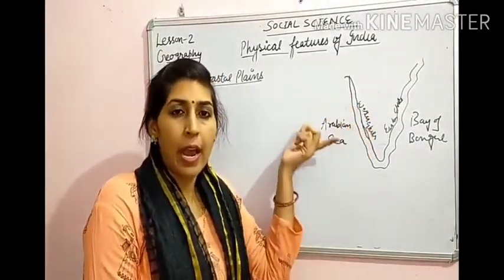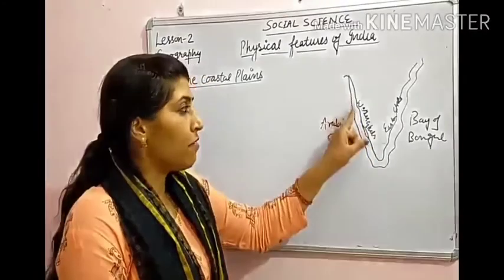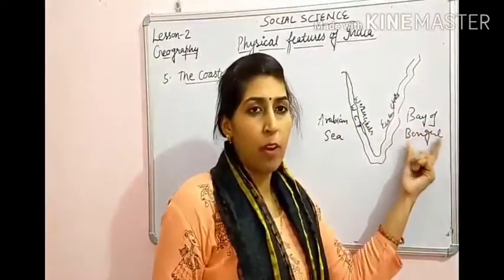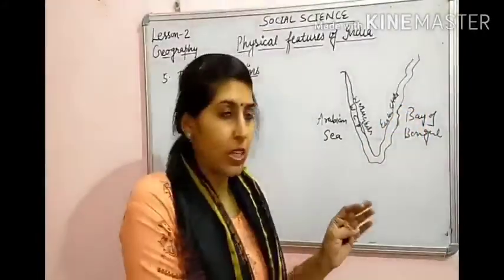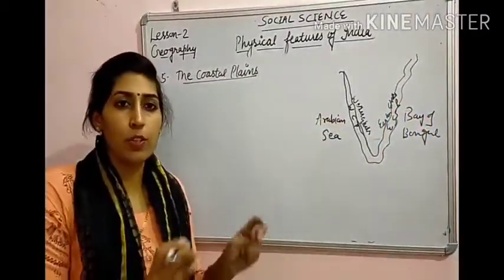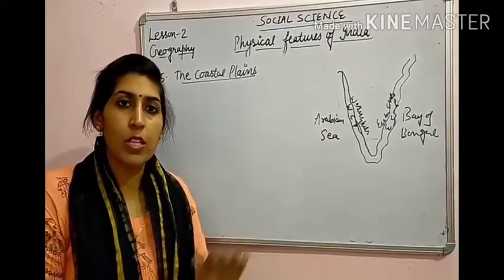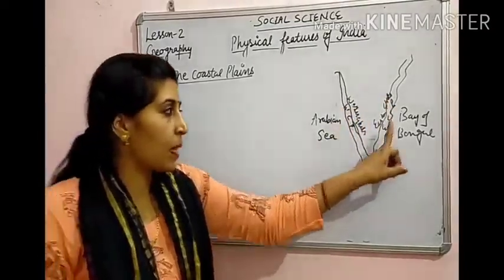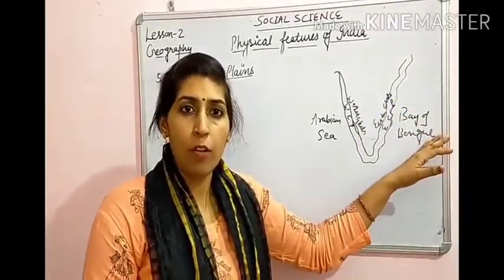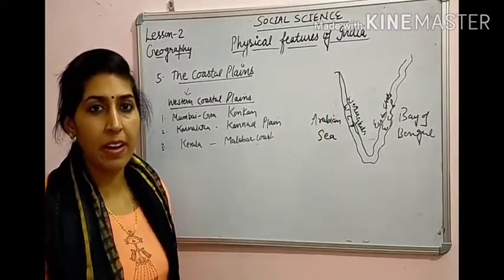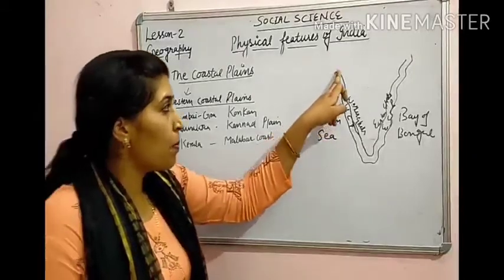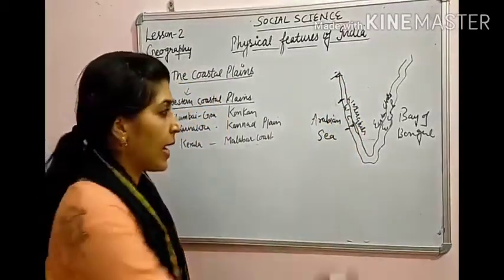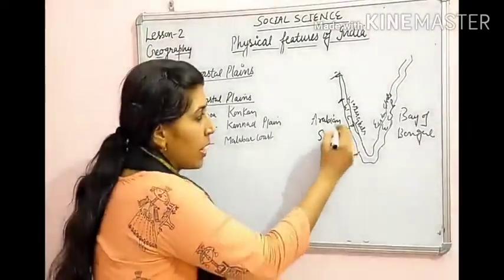The next physical feature of India is the Coastal Plains. Coastal region means one side land है and one side water है। Western Ghats और Arabian Sea के बीच में जो coastal plain है वो Western Coastal Plain है। Eastern Ghats और Bay of Bengal के बीच में जो coastal plain है वो Eastern Coastal Plain है। Western Coastal Plains को regionally तीन parts में divide किया जाता है: Mumbai to Goa को Konkan, Karnataka में Karnad, और Kerala में Malabar Coast कहा जाता है।